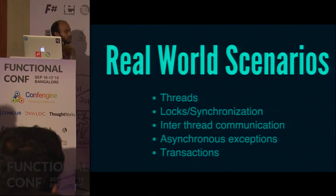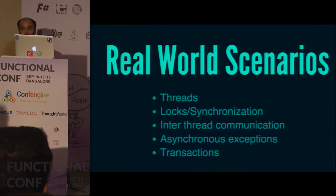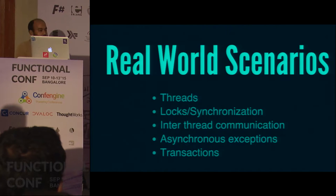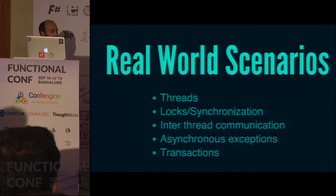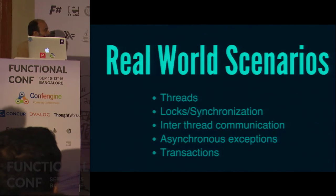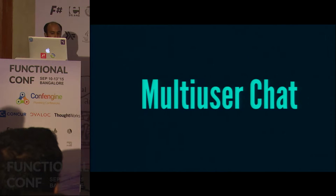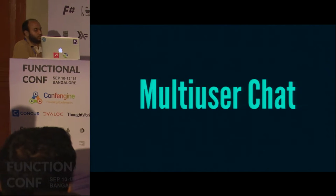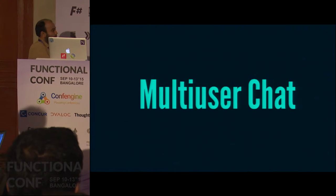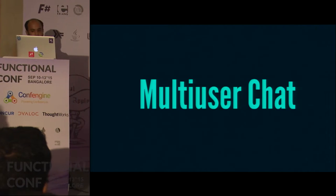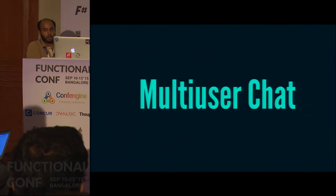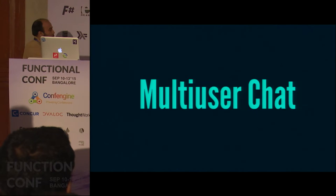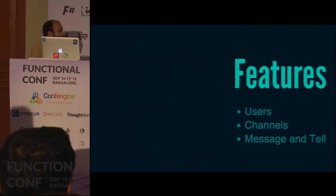I assume that people are familiar with Haskell here, because I'm not going to talk about syntax, libraries, or how to structure code. I'm just going to directly jump into the concurrency tools it provides. To demonstrate the tools, we're going to write a multi-user chat server, which is a typical example of a concurrent program.